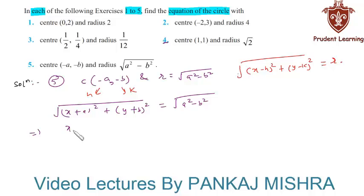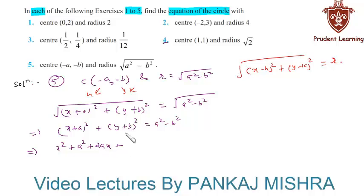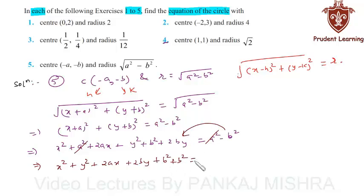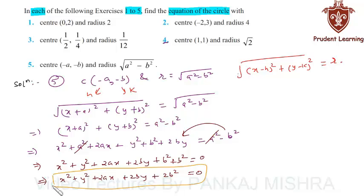Squaring both sides, (x plus a) whole square plus (y plus b) whole square equals a square minus b square. Expanding: x square plus a square plus 2ax plus y square plus b square plus 2by equals a square minus b square. Cancelling a square on both sides, we get x square plus y square plus 2ax plus 2by plus b square plus b square equal to 0, which is x square plus y square plus 2ax plus 2by plus 2b square equal to 0. This is the required equation of the given circle, completing our solution.